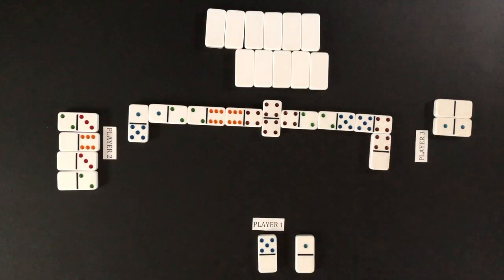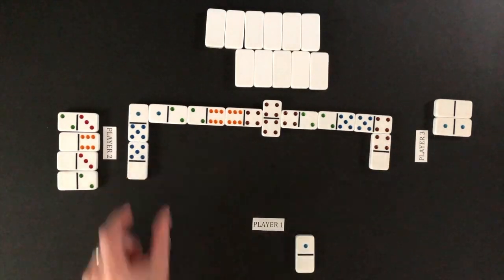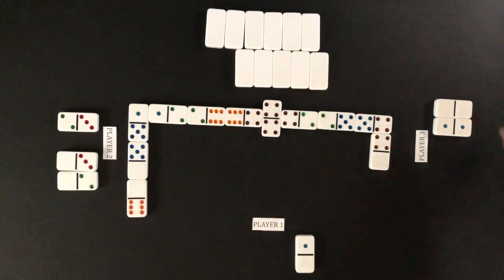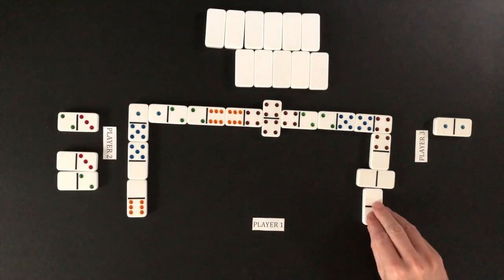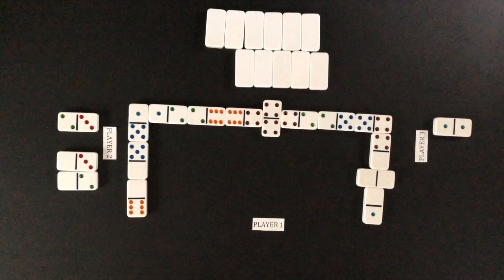Play moves to player three. Players again continue to take turns making matches if possible. Play returns to player one who is able to play the last domino in hand. Player one wins the round.